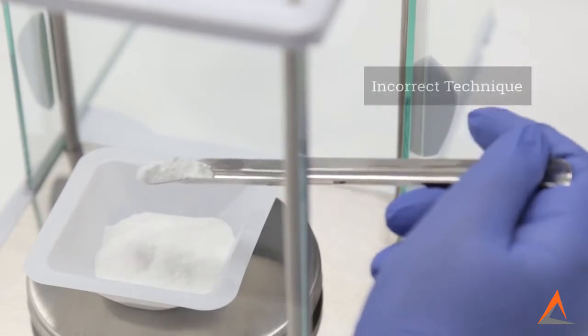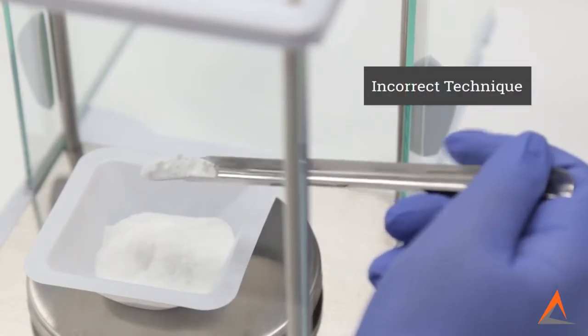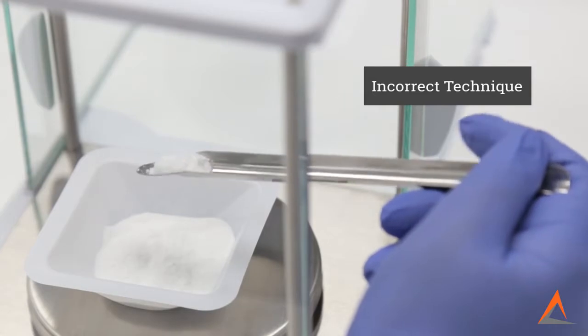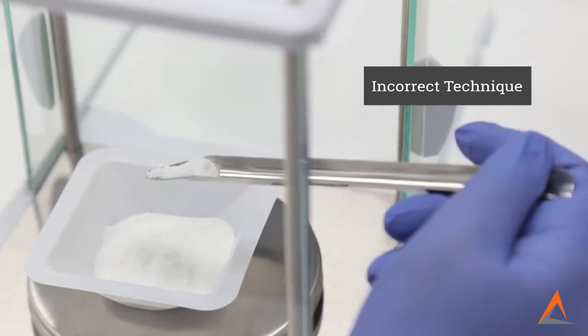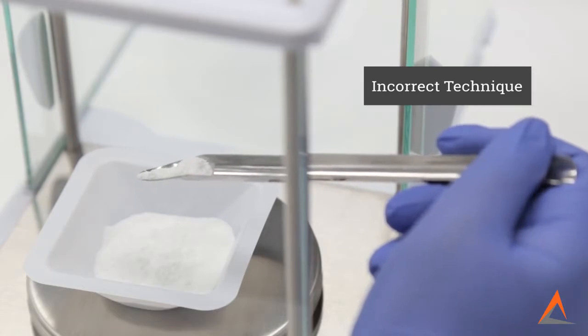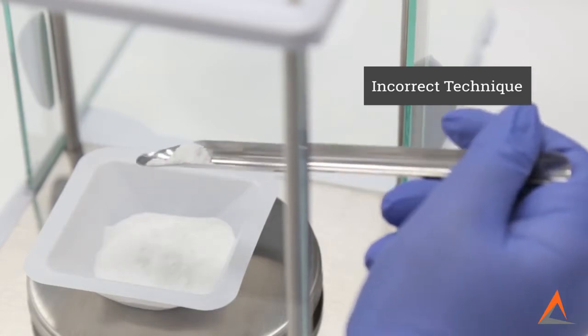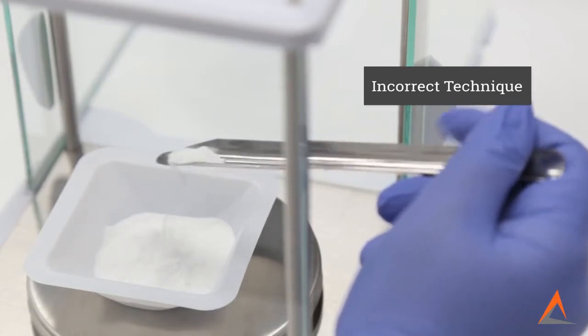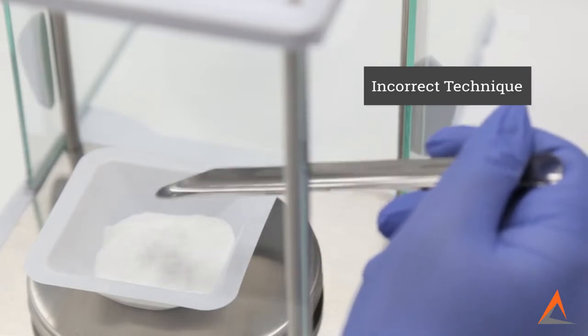When you use your index finger and tap the spatula, the spatula is experiencing a large range of movement and this leads to having less control of the quantity of powder that falls into your weigh boat. Using this flawed technique, it is very easy to add too much powder into the weigh boat and overshoot the desired weight value.